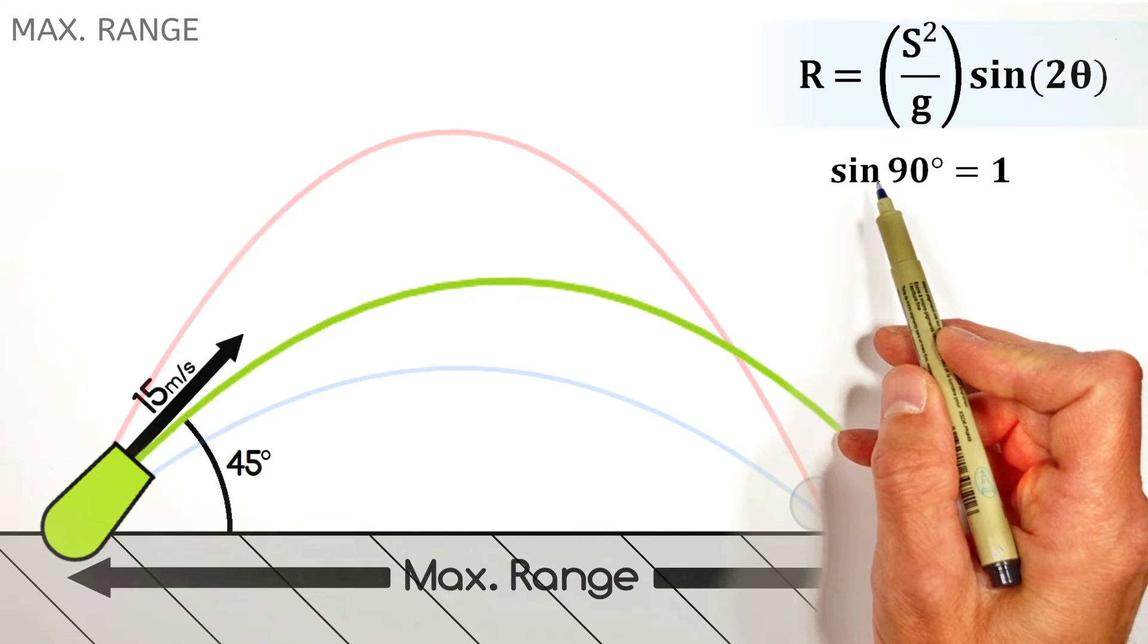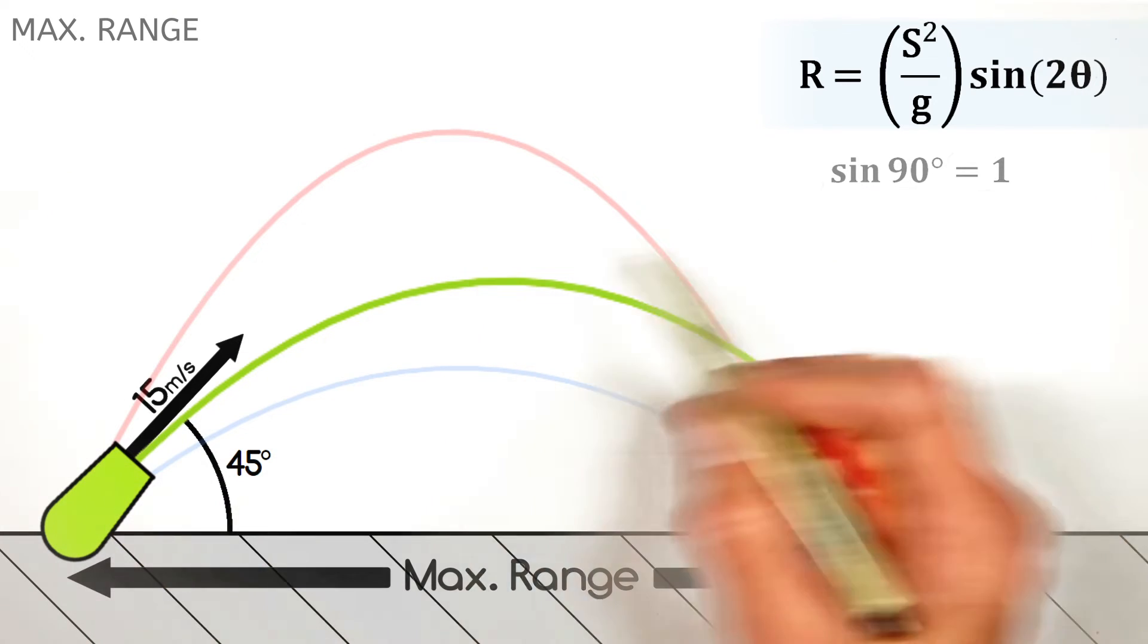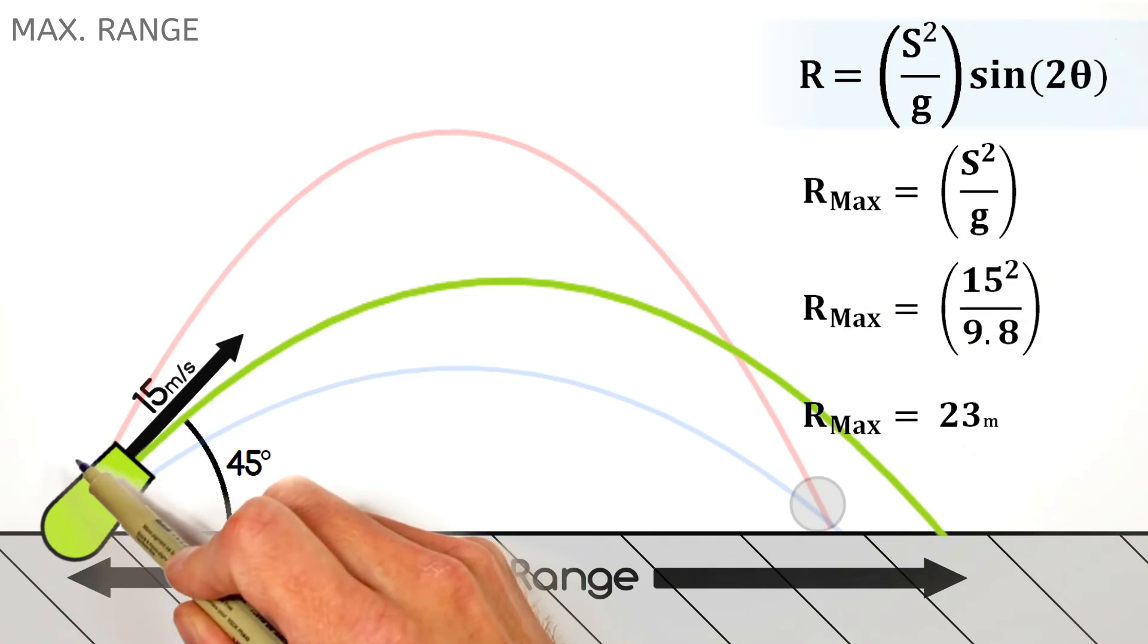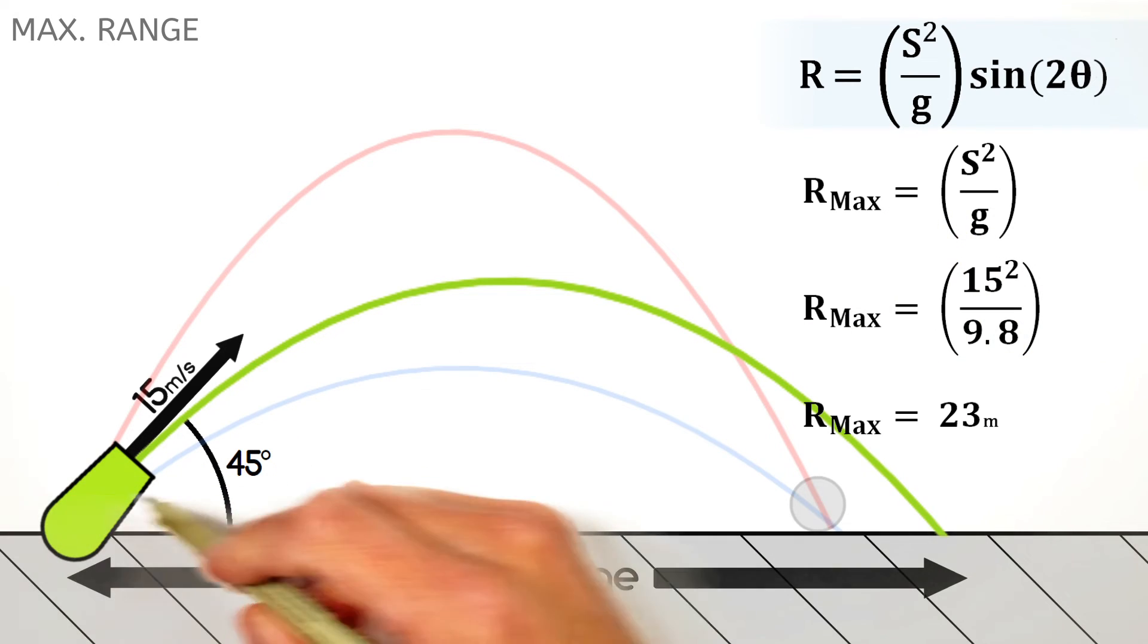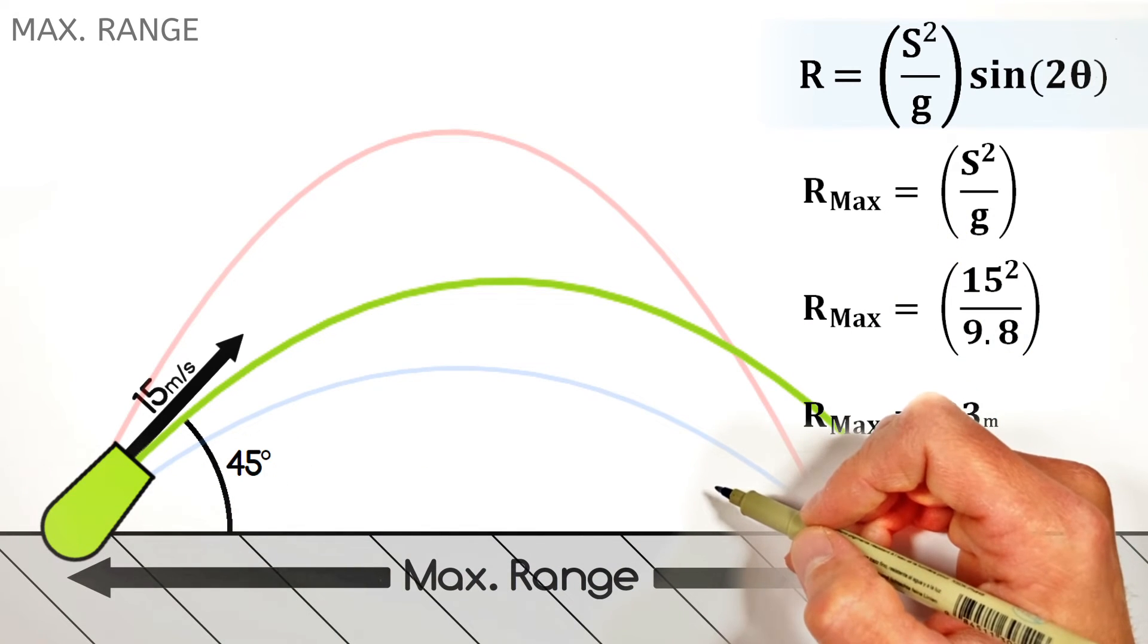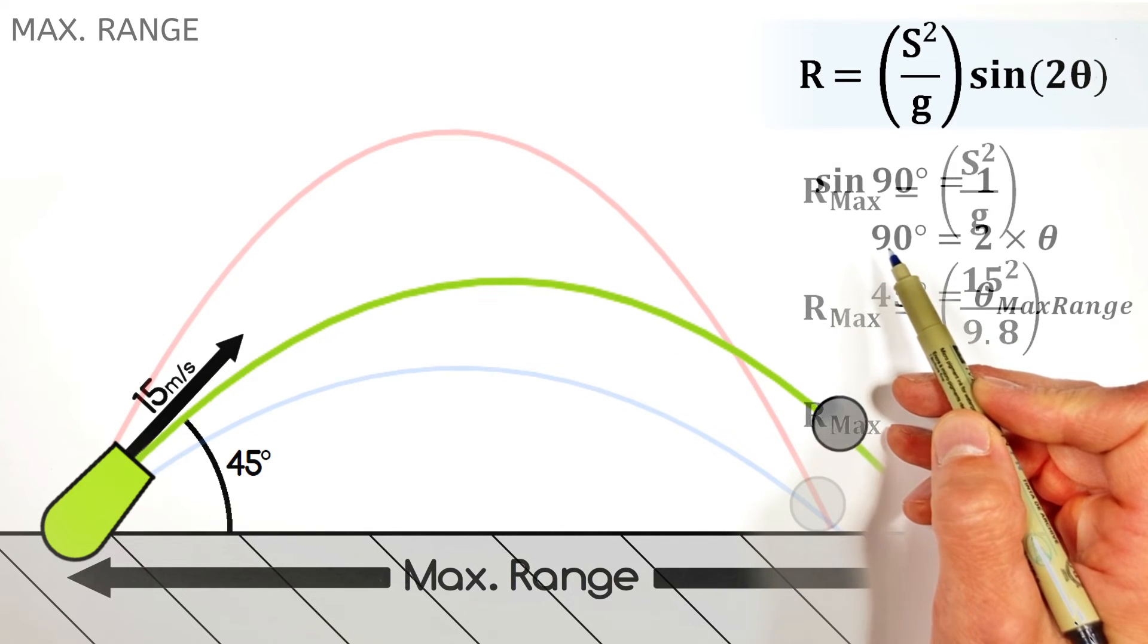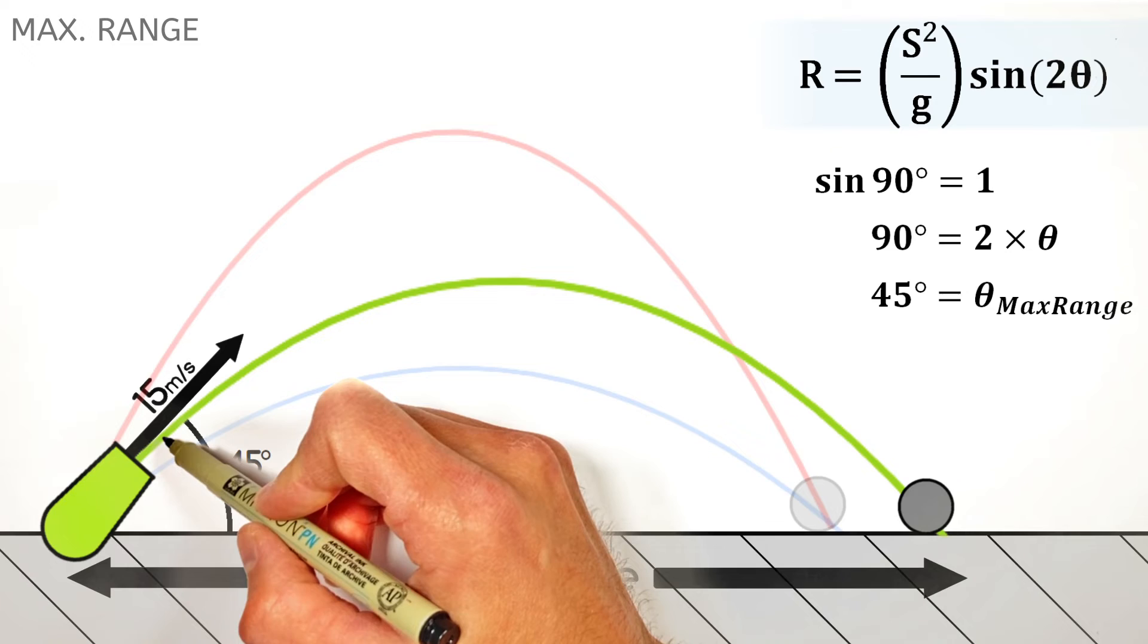So the largest the range can ever be for a cannonball is going to be s squared over g, which in the case of our 15 meter per second cannonball is going to be 23 meters. And that occurs when we shoot our cannon, according to the math, so that this angle is 45 degrees.